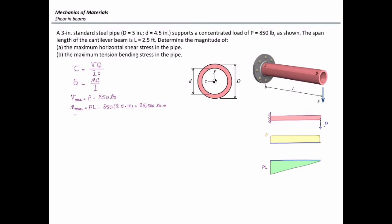The next parameter to determine is the moment of inertia. For a tubular section it is calculated as I = (π/64)(D_o^4 - D_i^4), where the external diameter is 5 inches and the internal diameter is 4.5 inches. That gives a moment of inertia of 10.55 in⁴.